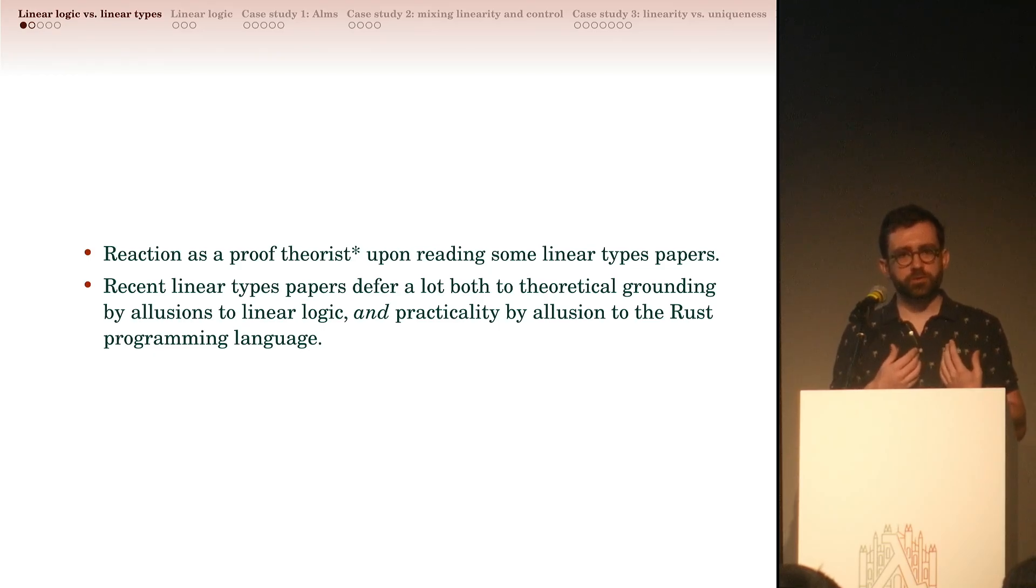I am, at the start, more of a proof theorist working in linear logic, and more recently I studied notions of ownership in programming languages. I wanted to share my reaction to reading some linear types papers and some observations. Recent linear types papers differ a lot in their theoretical grounding by making allusions to linear logic, and at the same time they make claims about practicality by making allusions to the Rust programming language.